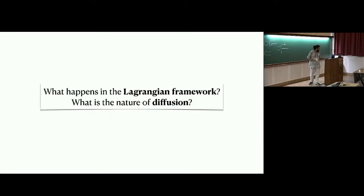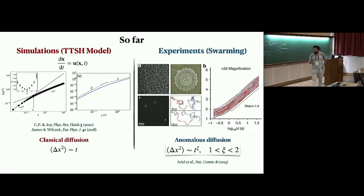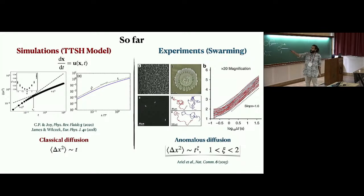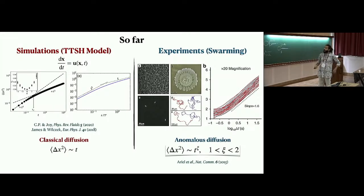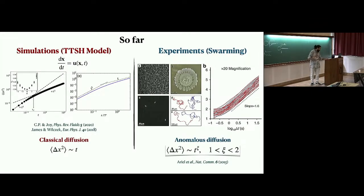So far everything was in the Eulerian picture — spectra, intermittency, chaos. Now: what happens in the Lagrangian framework? That's where we encounter diffusion. Interestingly, everybody who's looked at diffusion in this model has been at ICTS at some point. Previous simulations showed a ballistic-to-diffusive transition — classical diffusion. Whereas in experiments, a very interesting paper by Gillerial showed that in the swarming state, bacteria can actually perform anomalous diffusion with exponent around 1.6, characterizing trajectories as Lévy walks. We wondered why this had not been seen in simulations.